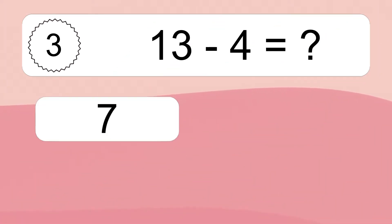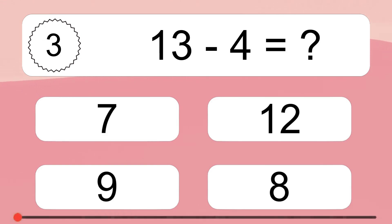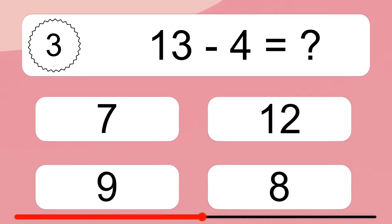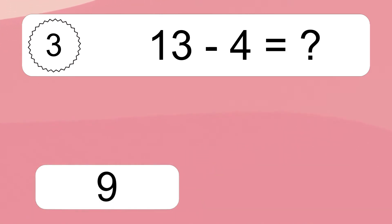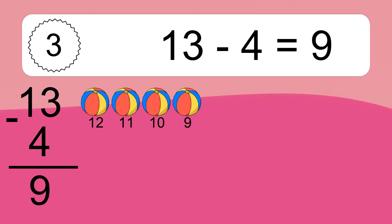13 minus 4 equals what? 13 minus 4 equals 9. Let's count it: 12, 11, 10, 9.